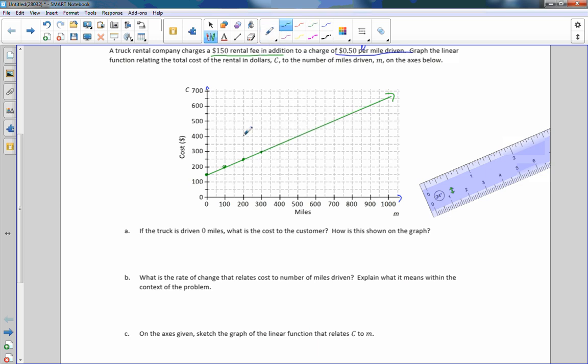Now we are going to answer some questions. Part A: if the truck is driven zero miles, what is the cost to the customer? That is $150. How is this shown on the graph? It is the point (0, 150). We're assuming there was a contract signed. You went into the rental place and rented the truck. You just haven't left yet. You've paid the $150. Under this circumstance, you are at the truck rental company, you rented the truck and haven't moved yet. That is our initial value.